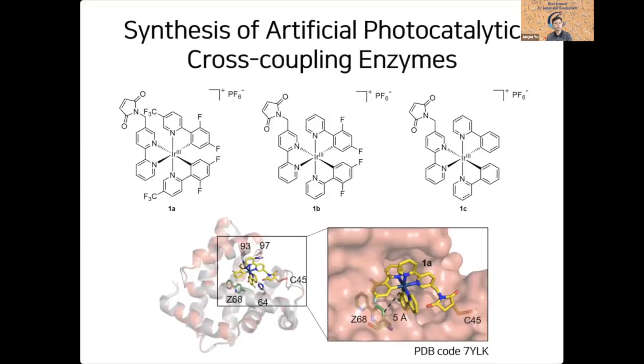And then we attached these molecules into the protein scaffold, as I explained earlier, and we obtained a crystal structure of these artificial metalloenzymes. As we expected, this iridium photocatalyst was positioned nearby the nickel-bipyridyl complexes, indicating that efficient electron transfer may occur.